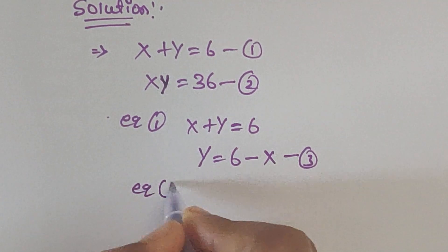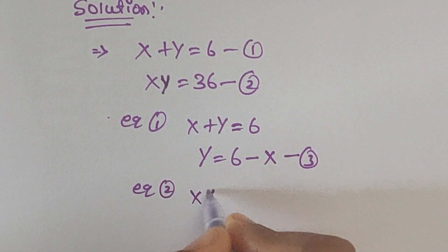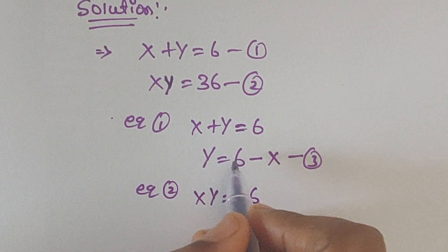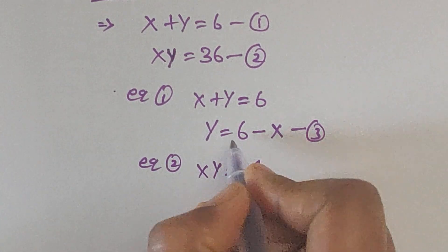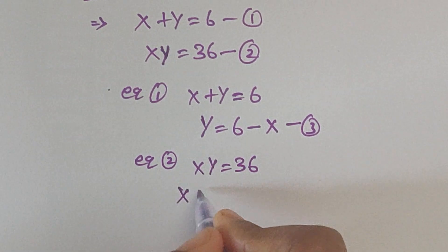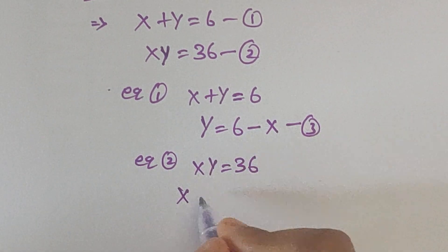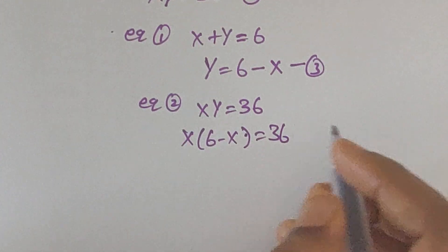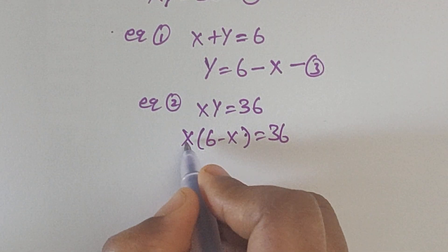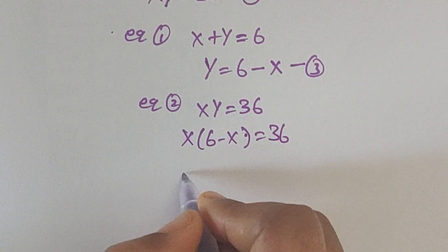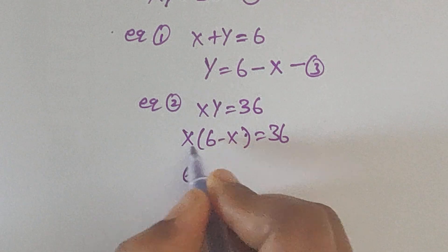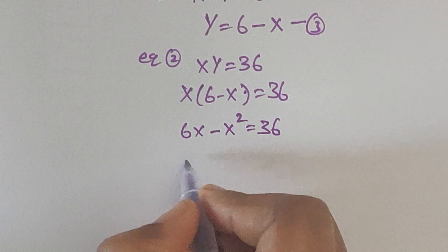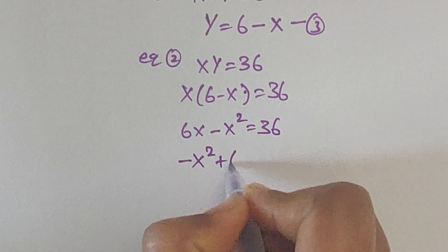In equation 2, x times y equals 36. Substitute the value of y from equation 3: x times (6 minus x) equals 36. Multiplying these two terms gives 6x minus x squared equals 36.